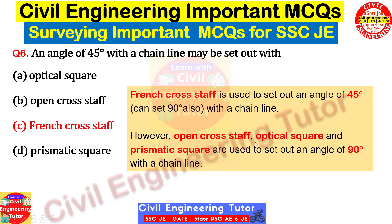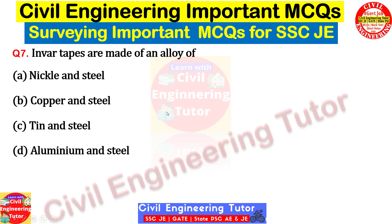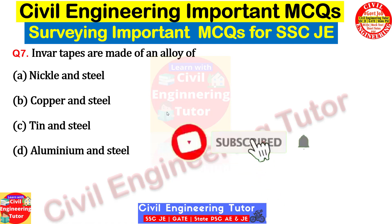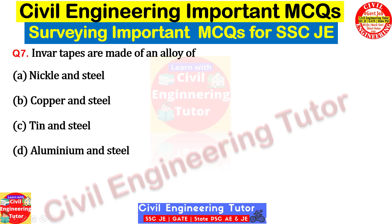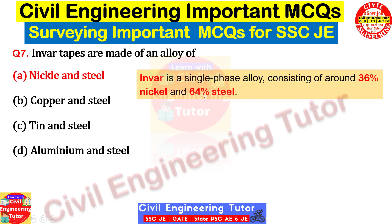Question seven: invar tapes are made of an alloy of — options are nickel and steel, copper and steel, tin and steel, or aluminum and steel. The correct answer is nickel and steel — you can remember it as 'stickle' (steel + nickel). Steel constitutes 64% and nickel 36%. So invar is an alloy of steel and nickel.